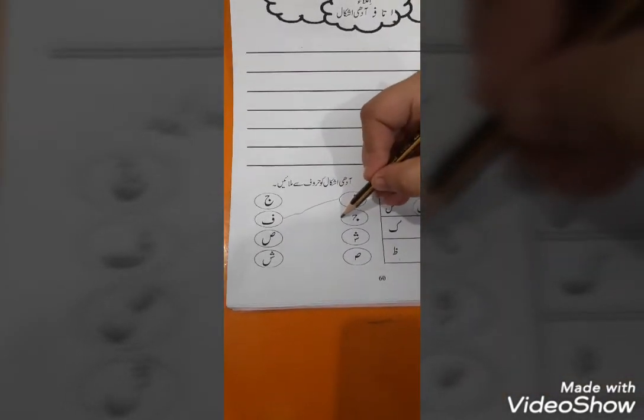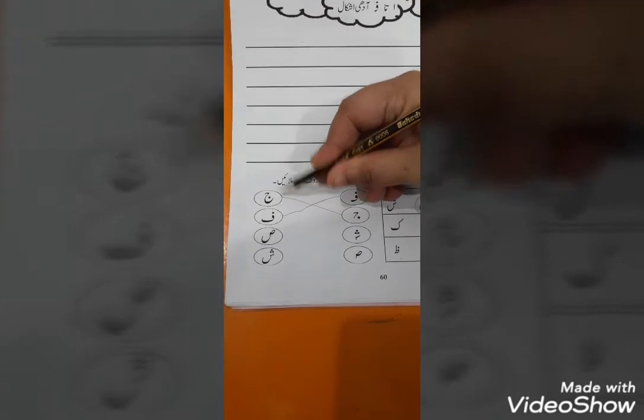What is the aadhi shakal of next? Jeen. So, find out the harf of jeen. Where is jeen? Here you have jeen. So, put the pencil on this aadhi shakal and match to the harf jeen.